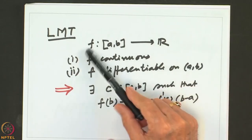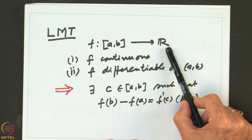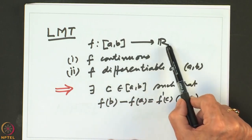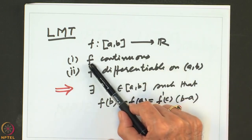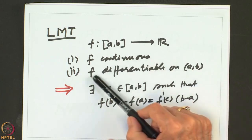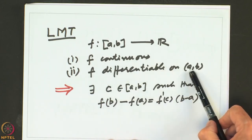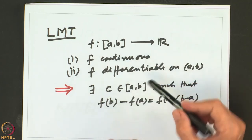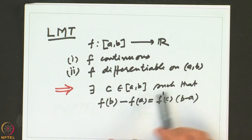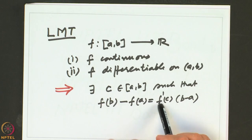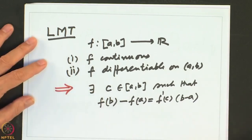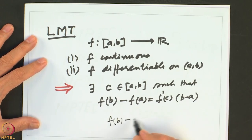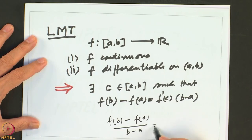Lagrange's Mean Value Theorem is about a function f defined on a closed bounded interval [a, b] to ℝ. We are given that f is continuous on the closed bounded interval [a, b] and f is differentiable on the open interval (a, b). If these two conditions are satisfied, then there exists a point c belonging to (a, b) such that f(b) − f(a) = f'(c) · (b − a).